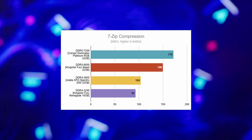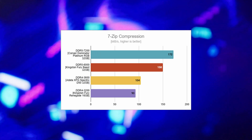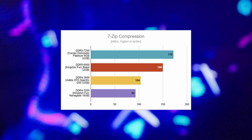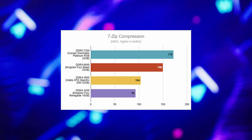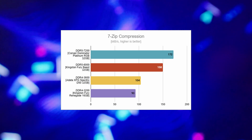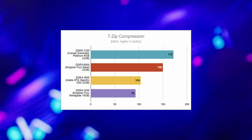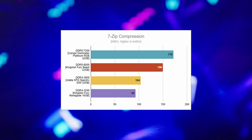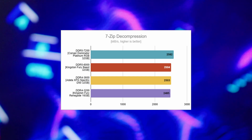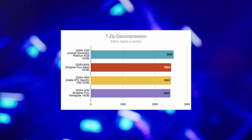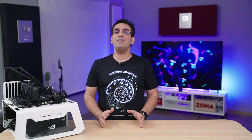The most remarkable performance boost across all benchmarks was in 7-zip's compression test. Each increase in RAM frequency translated into considerably higher compression speed. Upgrading from DDR4-3200 to DDR5-6000 meant a speed increase of 61%, while switching from DDR4-3600 to DDR5-7200 offered a boost of almost 66%. On the other hand, the decompression speeds measured by 7-zip were virtually the same regardless of what RAM was used — the differences were negligible.